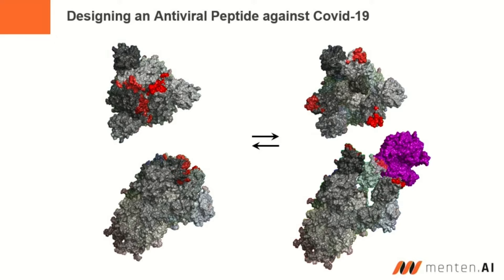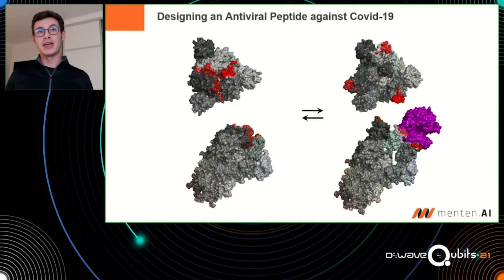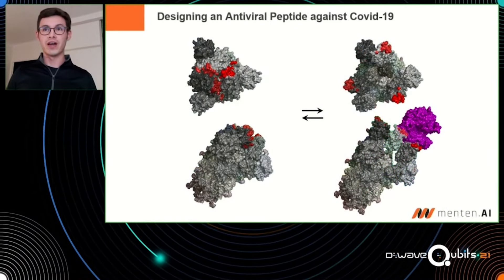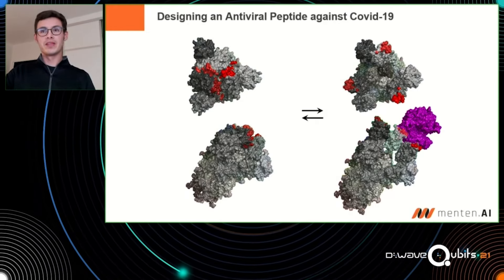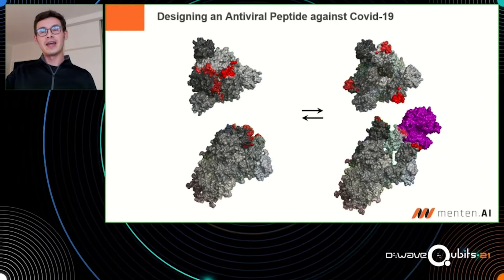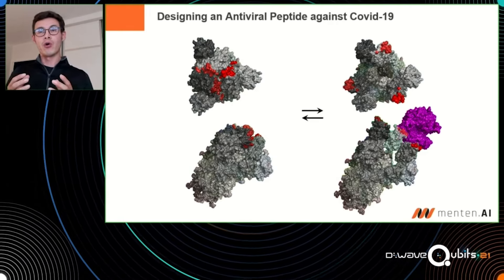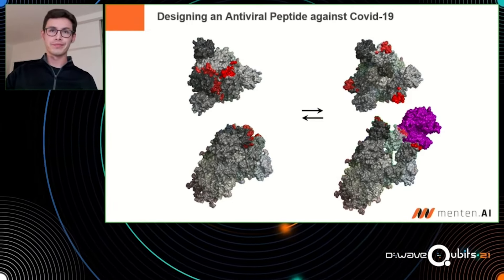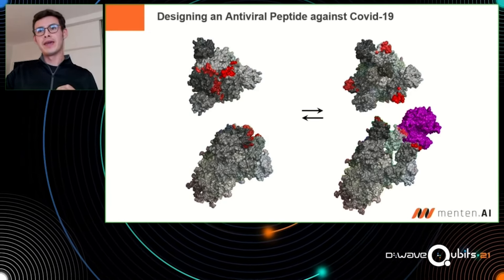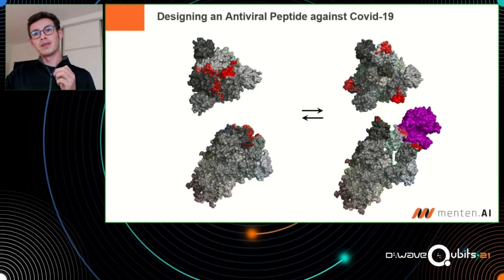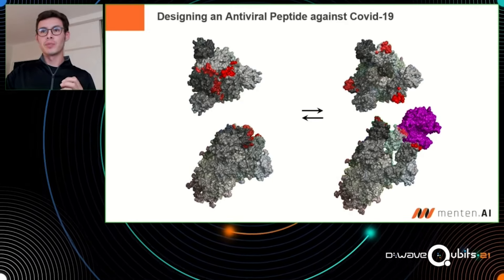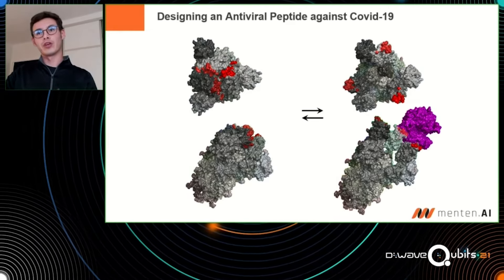Last year, when COVID happened around March, there was a hope that we could use this computational method to design an antiviral peptide against the COVID-19 virus. The challenge with the COVID-19 virus is that the spike protein exists in two structural conformations. We had to design an antiviral that would target the spike protein in a way that it would disrupt its interaction with its target, the human cell.